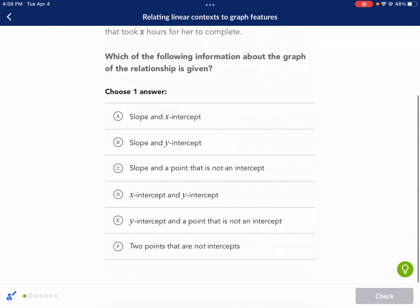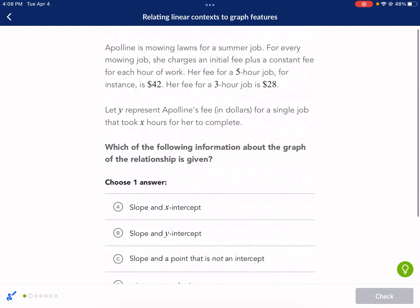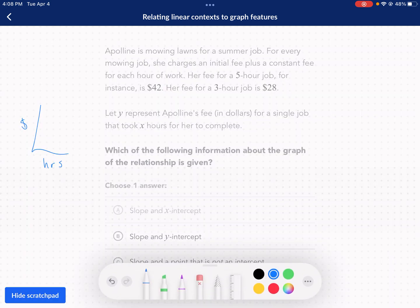So it's saying which of these pieces of information about the graph do we know? So we know that a couple things. Is it the slope and X intercept? Is it the slope and Y intercept? Is it a slope and a point that is not an intercept? Is it the X intercept and Y intercept? Y intercept and a point that is not an intercept or two points that are not intercepts? Let's analyze this.